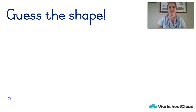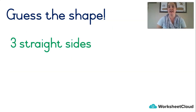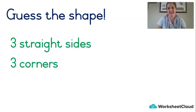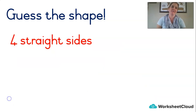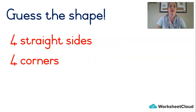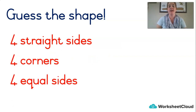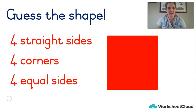How about this one? It's got three straight sides and three corners. That's right, it's a triangle! Last one: four straight sides, four corners, but this time four equal sides. What could that be? It's a square! Well done!